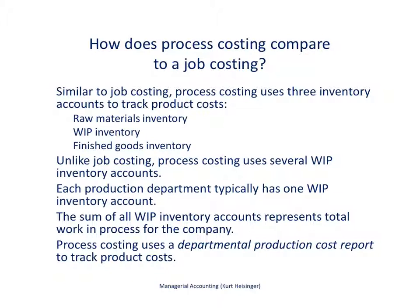Now let's look at how process costing compares with job costing, starting with similarities. Similar to job costing, process costing does use three different inventory accounts — and if you've studied job costing, you've seen these accounts before. Those accounts are raw materials, work in process, and finished goods inventory.